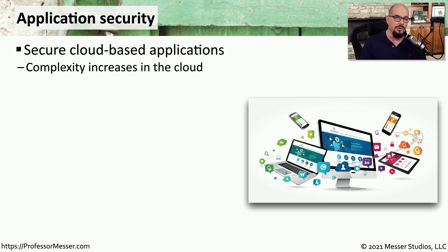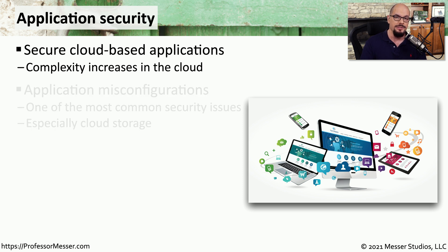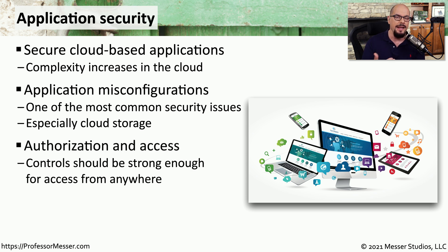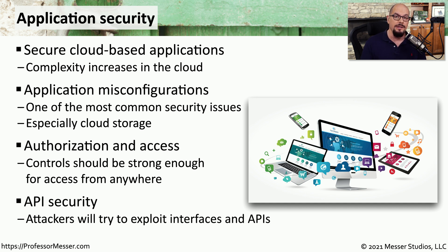Securing an application running on your local network is difficult enough. When we move that application to the cloud, there are additional security concerns. One of the biggest concerns is a misconfiguration of the application itself — you could implement the strongest encryption and have the strongest security policies in place, but if someone misconfigures the application to allow access, all of those security policies aren't helping you. There's also a need for granular authorization controls allowing access for individual users or groups, and you want to monitor all API calls being made by the application to detect anyone trying to exploit an existing API or gain unauthorized access to data.